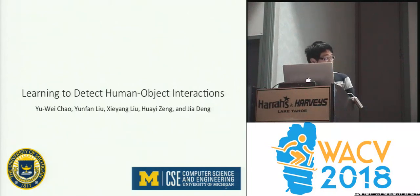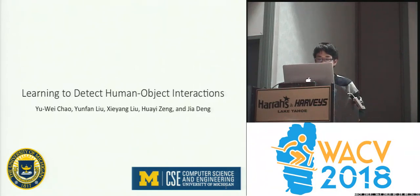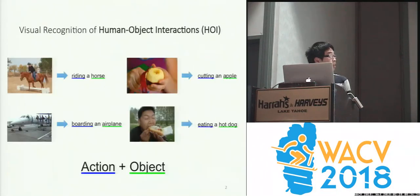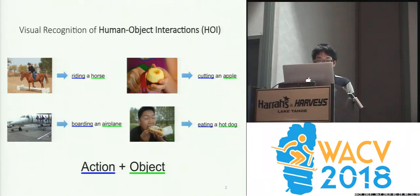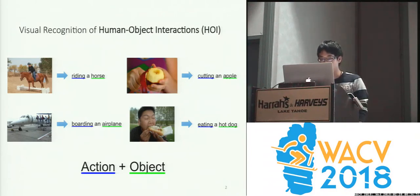I'm Yui Chow from the University of Michigan. This work is about learning to detect human-object interactions. Visual recognition of human-object interactions is an important problem of action and activity understanding. Here the goal is to not only recognize the object, but also the actions being performed to the object — for example, a person riding a horse or a person cutting an apple.